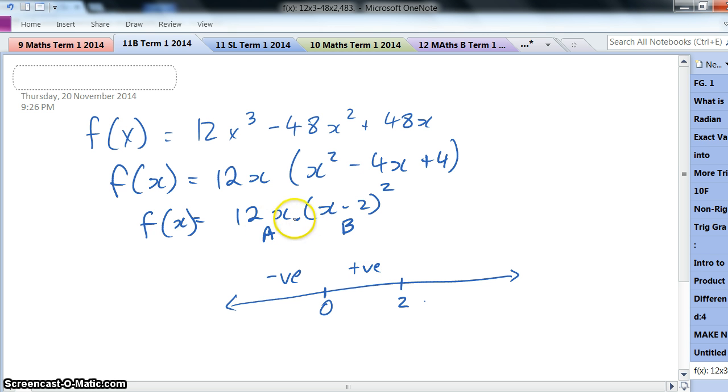And when I'm to the right of 2, well, it's still going to be positive, isn't it? The A term, 12x, is positive. The (x - 2)² is positive.